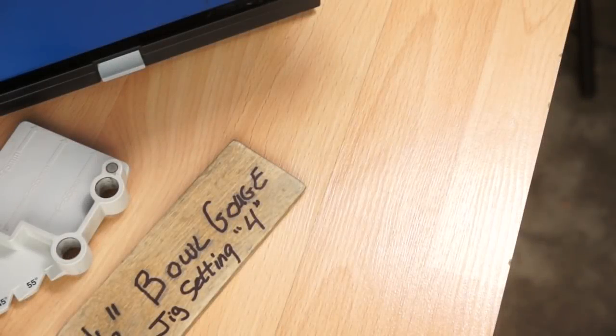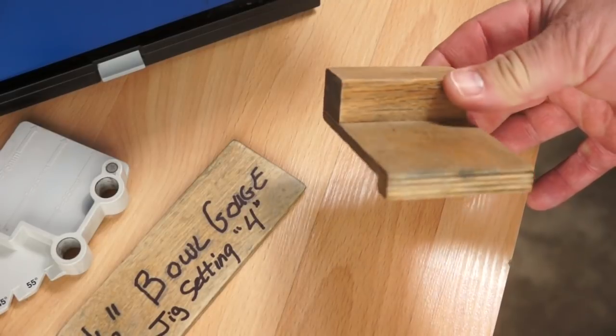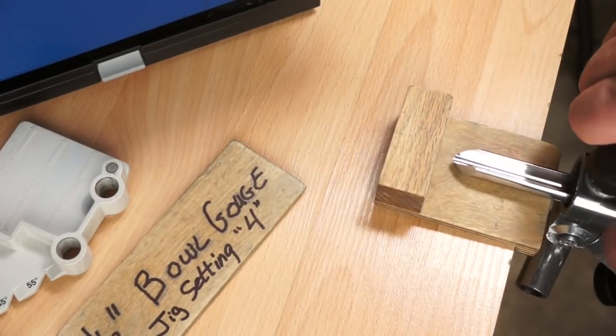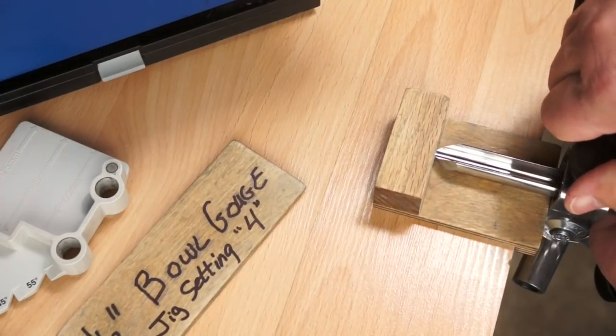If you have your own custom profile that's not covered by the TTS-100, you can still get that same repeatability. Just make a custom stop block to set the protrusion.